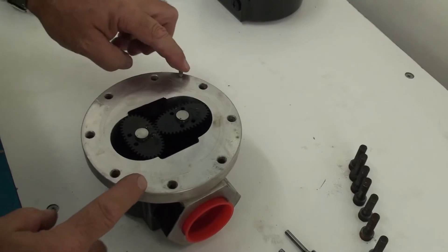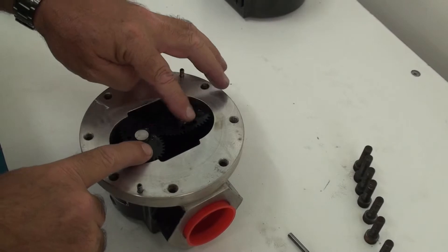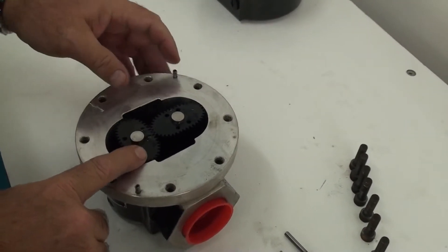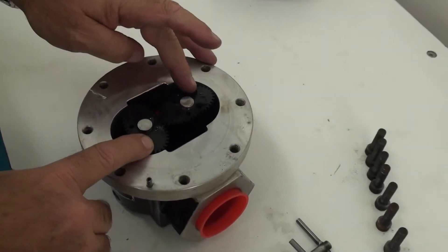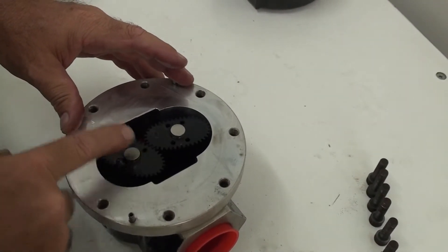As you can see there's the two dowel pins that locate the meter cap in one position and it exposes our two rotors. You'll see these rotors are at 90 degrees to each other and as you turn them you can see that they turn quite freely.